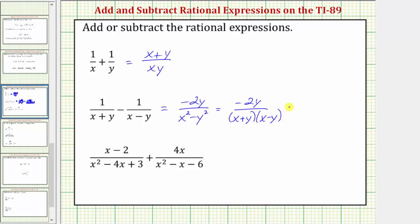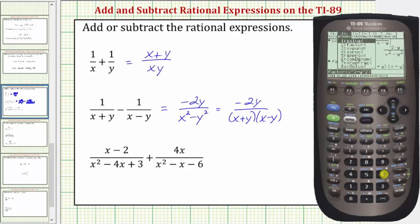Let's look at one more example. For this example, we will need parentheses around the numerators and denominators. So again, F2 number six,